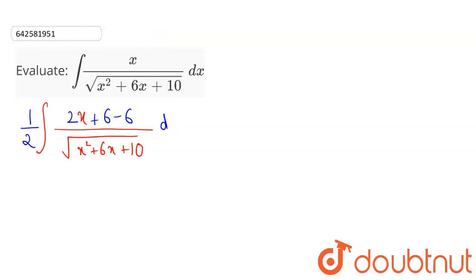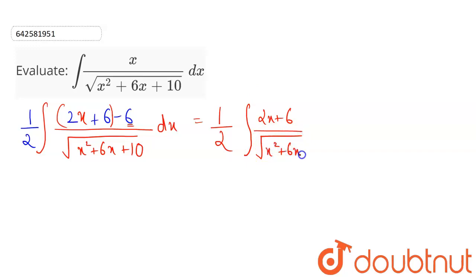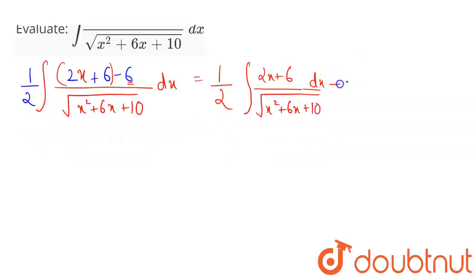So this will be into dx. Combining these two terms and subtracting this numerator with the denominator, I will be getting: this equals one-half of the integral of (2x + 6) divided by the square root of x squared plus 6x plus 10, into dx. This will be minus one-half times the integral of 6 divided by the square root of x squared plus 6x plus 10.